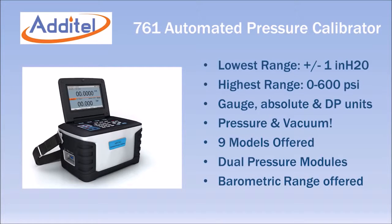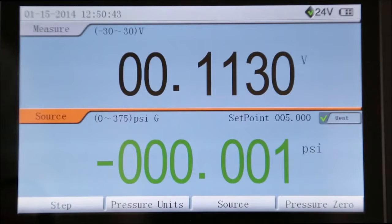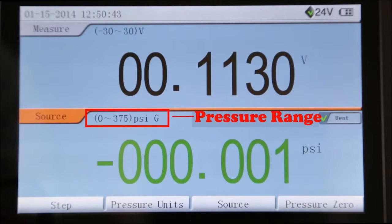The 761 is manufactured in 9 different models that cover gauge, absolute, and differential pressures and vacuum from 1 inch of water to 600 psi. Each 761 has two internal pressure sensors to provide accurate measurement over a wide range of pressure and vacuum.